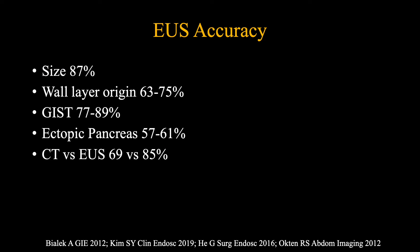However, the data on EUS is sobering. Size as measured by EUS is only 87% accurate when compared to resected specimens. The accuracy for determining the wall layer of origin is at best 75%. The accuracy for diagnosing even with tissue diagnosis is 77 to 90%, and for ectopic pancreas it is even less at around 60%. However, EUS is still far superior to high-resolution CT for diagnosing subepithelial lesions accurately.